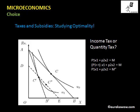In this lecture we are going to study optimality in the cases of taxes and subsidies. We will take two types of tax — income tax and quantity tax — and look into how the budget line shifts because of each, how the optimal choice of the consumer changes, and which tax is more efficient from a consumer point of view.